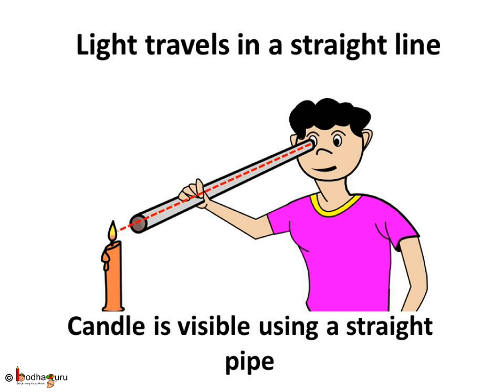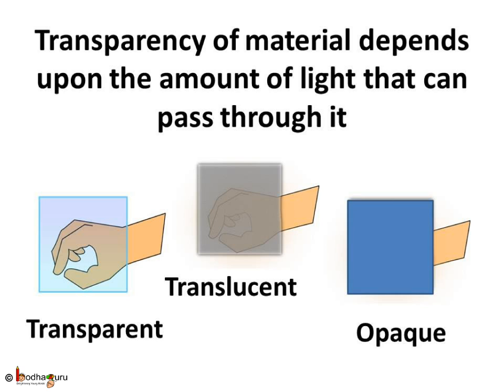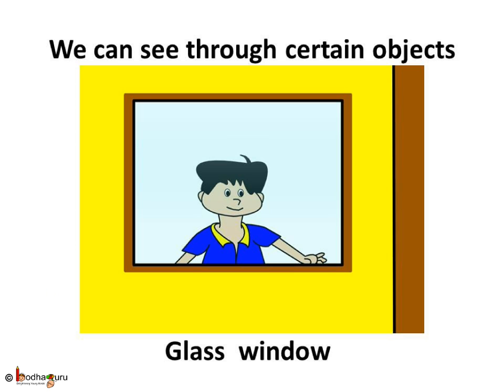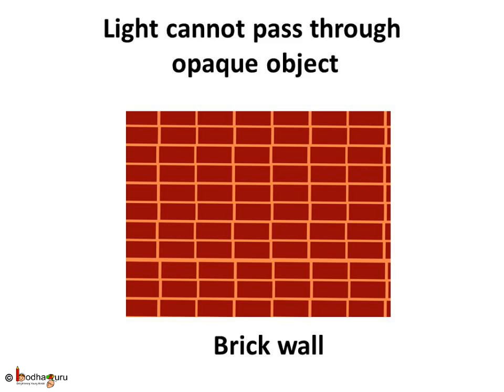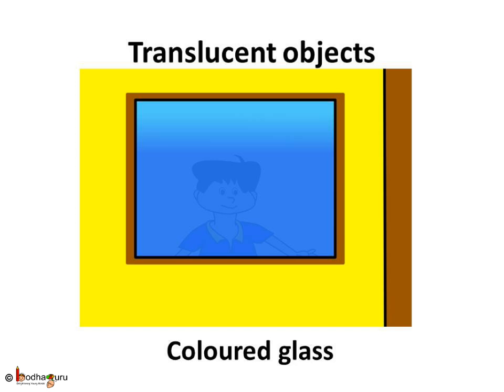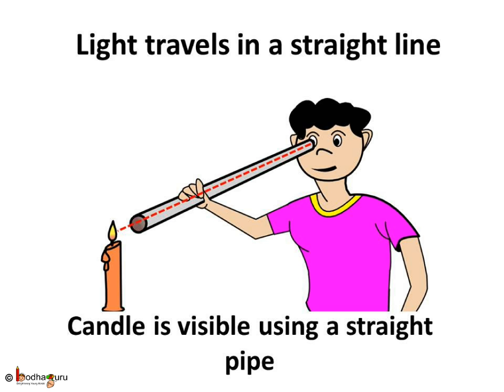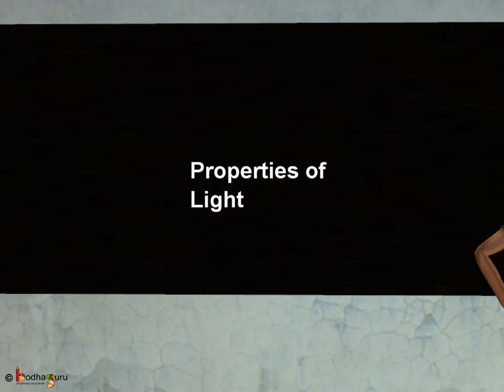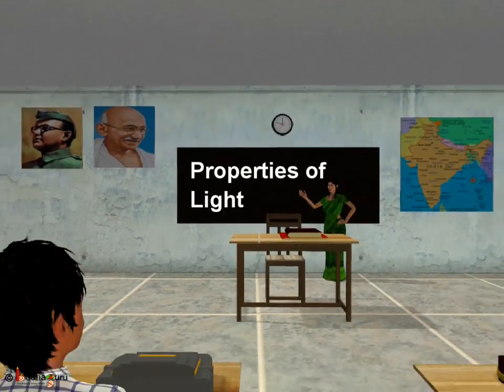To summarize: different types of material can pass different amounts of light through them. The transparent object allows all the light to pass through it and hence we can see clearly through it. The opaque object does not allow any light to pass through it and hence we cannot see through it. In between these two lies the translucent object, which allows only some amount of light to pass through it, so we can see through it partially but not clearly. And lastly, light travels in a straight line from a source to any point. That's all for today kids — enjoy your day, bye bye!